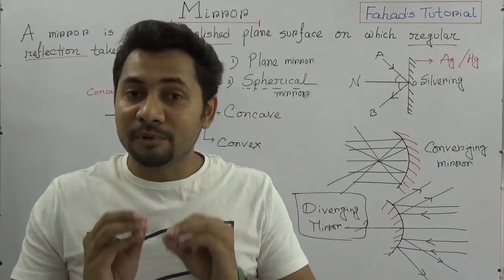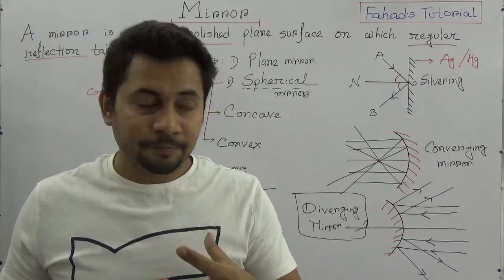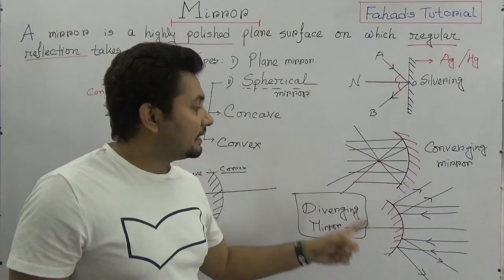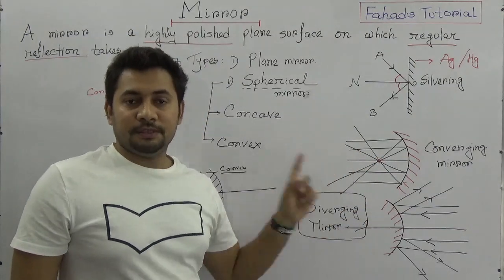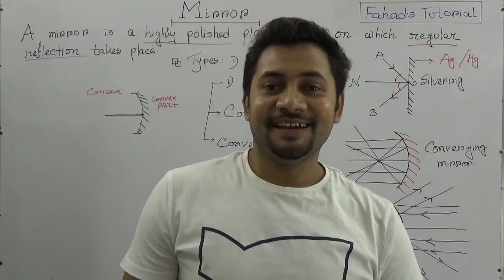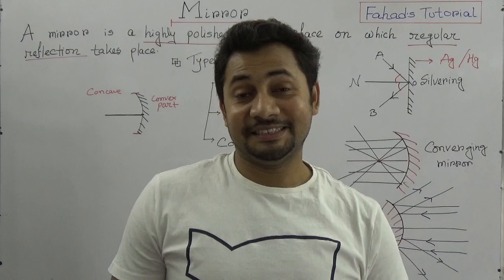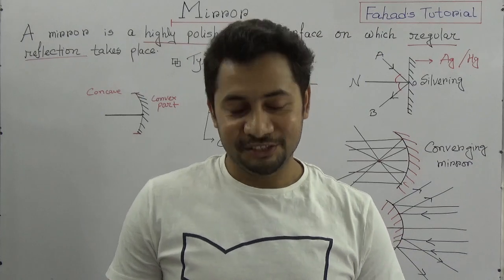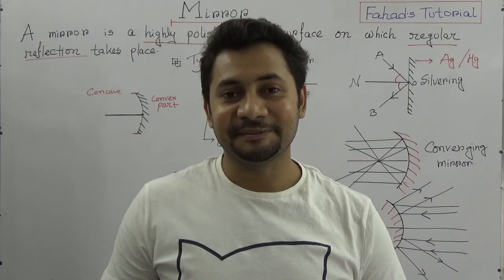That is very simple. A mirror is a highly polished plane surface on which regular reflection will take place. It is two types: plane mirror and spherical mirror. Spherical mirror is two types: concave and convex. The next tutorial will explain some quantities and topics regarding this. Take care, stay well, and study well. See you soon. Bye.